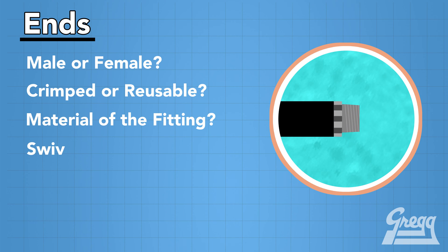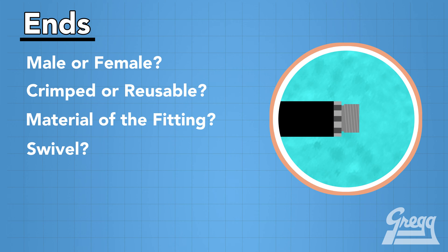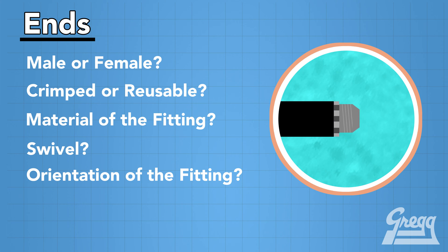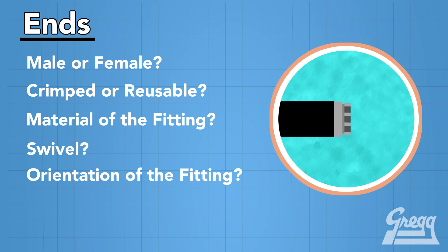Do you require those hose ends to swivel? Also, are they straight or are they angled? If they are angled, we would need to know the orientation of those fittings to properly determine how that hose assembly is going to fit.